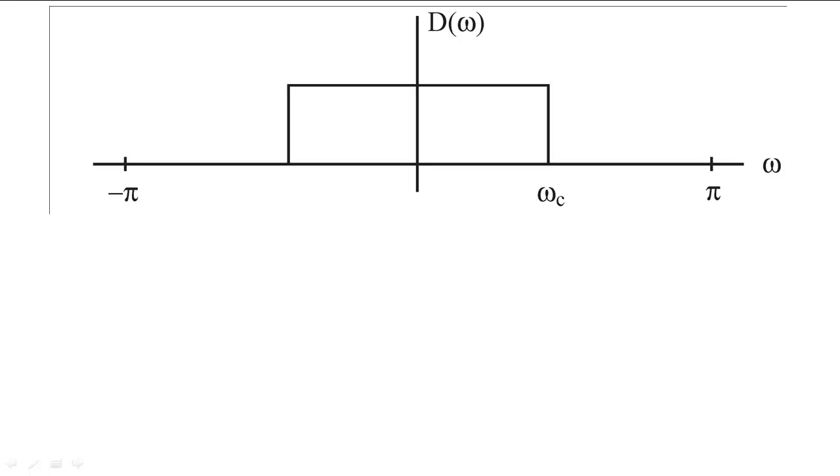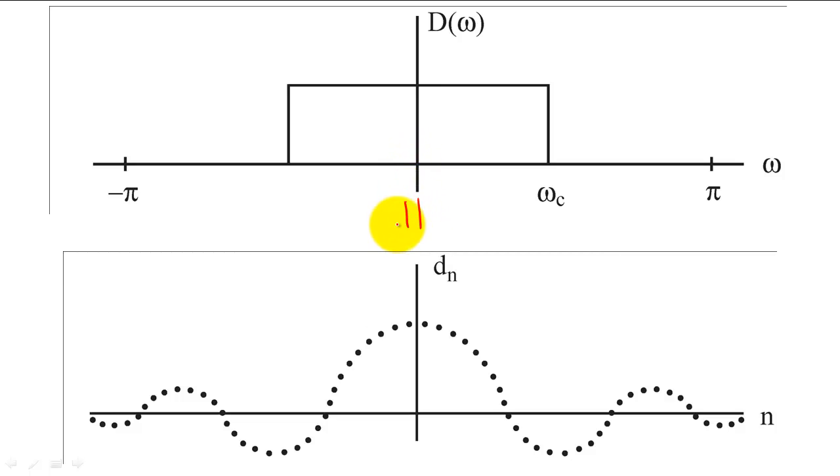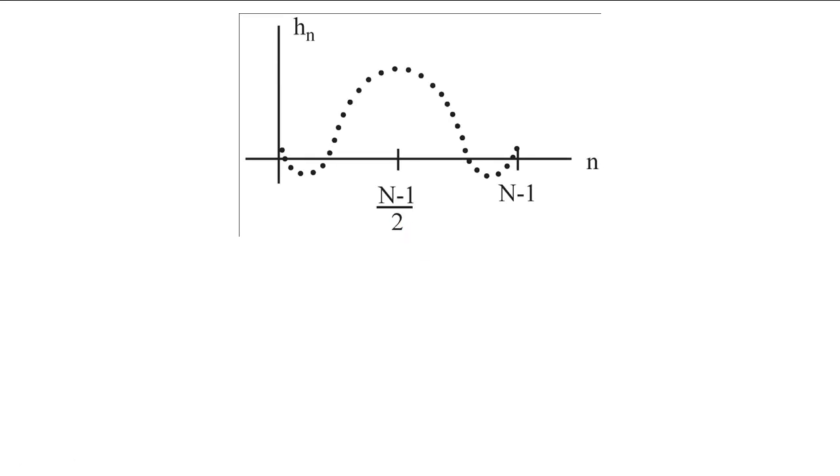We have previously shown that if we want to create an ideal low-pass filter, the filter coefficients will be a non-causal, infinitely long sync function. However, since we often do not want to implement such a system, we must choose to make the system causal by shifting the sync function, and then truncating the sync function to N samples to minimize computation time.